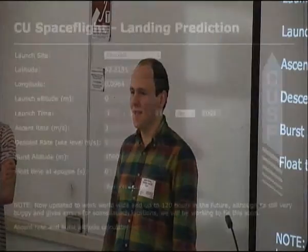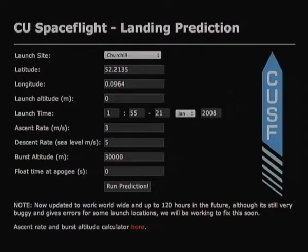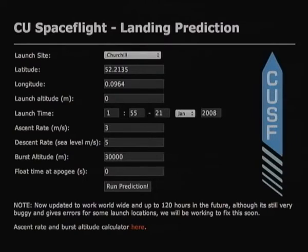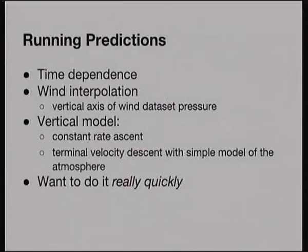The Predictor has been running as a project in Cambridge University Space Flight for some time. This title slide shows the very first web interface it ever had, around 2008-2009. Not much has changed — Churchill College Cambridge is still the default launch site. The interface has gotten a little easier to use since, and we no longer have the solid black background. It now works worldwide and up to 120 hours in the future, which is still the case today.